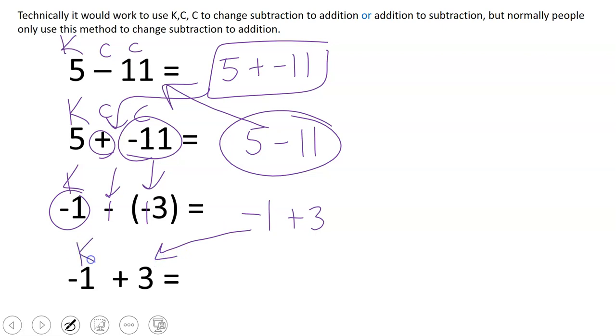But I could also use keep change change to go backwards and change it back to subtraction. So I keep the negative 1, I change the addition to subtraction, and I change the positive 3 to a negative 3, and look, I'm back to where I had started. Now all that being said,